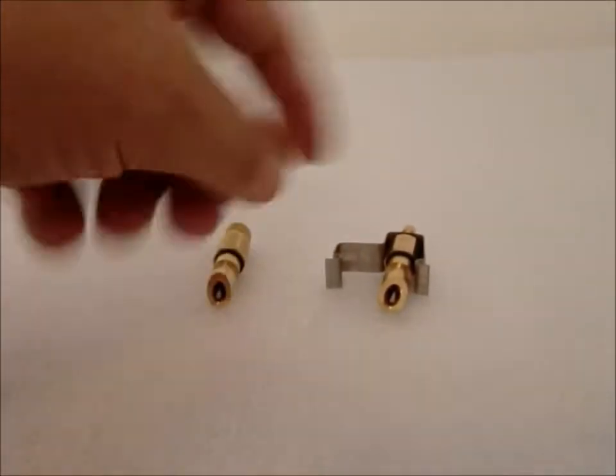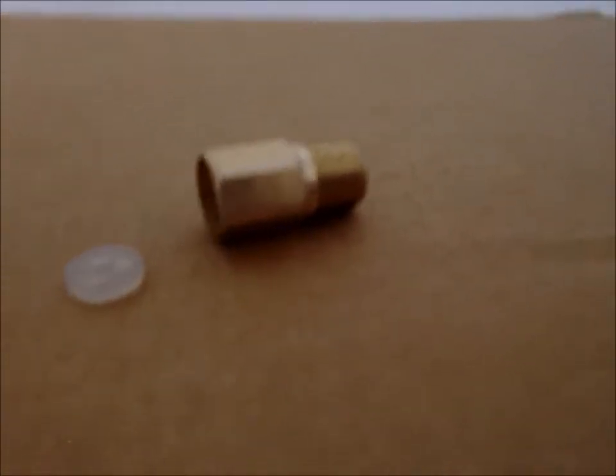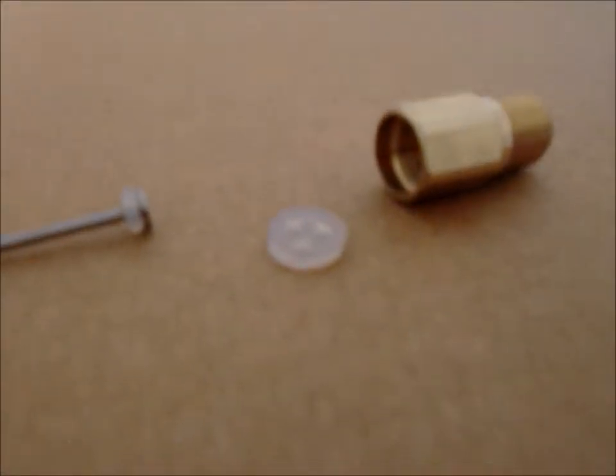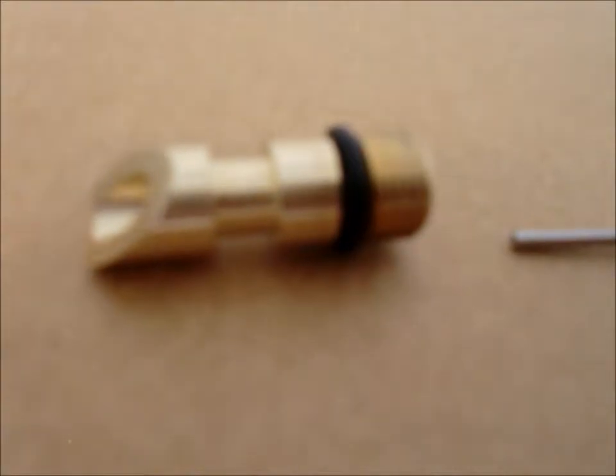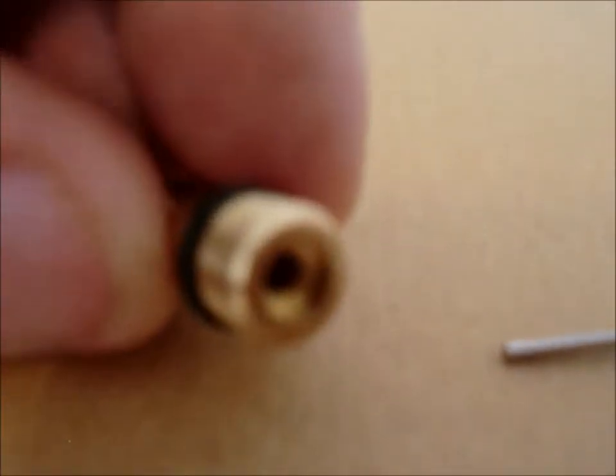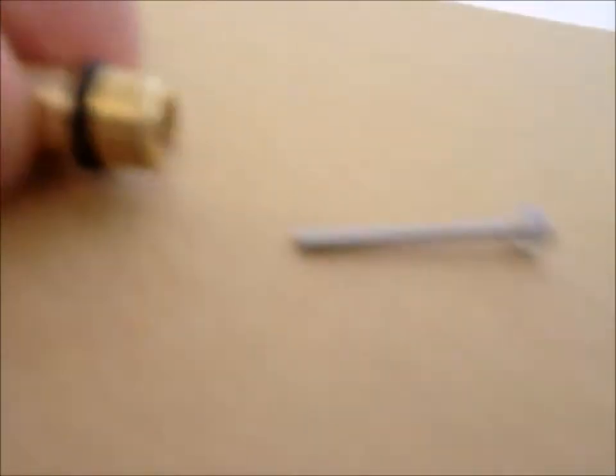So again, the SE2 and the SE1. This is what it looks like taken apart. You're going to have the rear of the nipple, a diaphragm, the trigger with an O-ring, and then the front of the nipple here with an O-ring. And that O-ring on the trigger sits right in there.